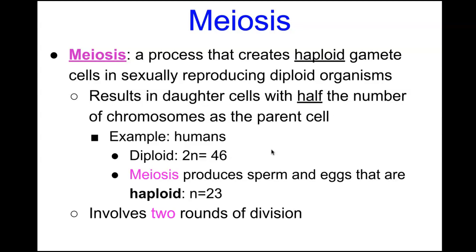Meiosis involves two successive divisions unlike mitosis, which has one division. That's because we need to go from the diploid chromosome number down to a haploid number. We call these two successive divisions meiosis I and meiosis II, which we don't see in mitosis.